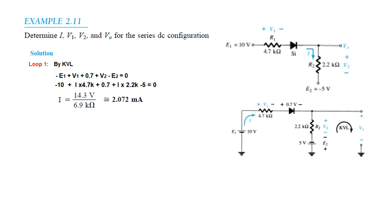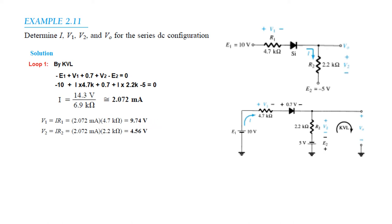The current through the circuit is I. We calculate V1 equals I times R1 and V2 equals I times R2. Substituting values, V1 is 9.74V and V2 is 4.56V.